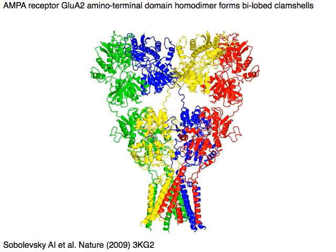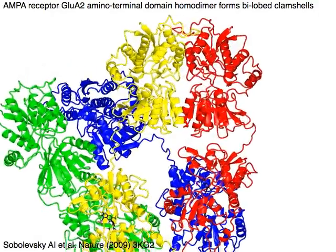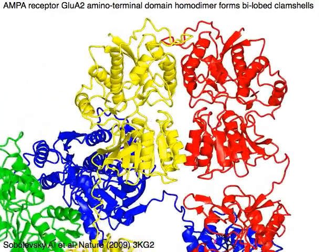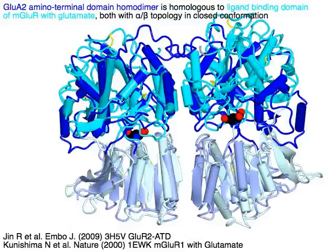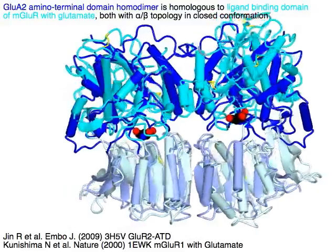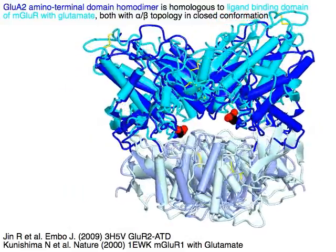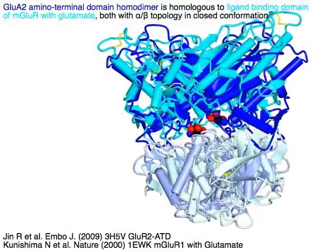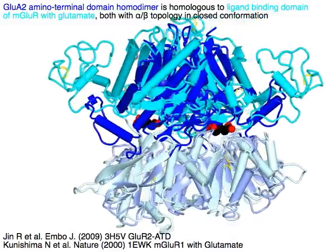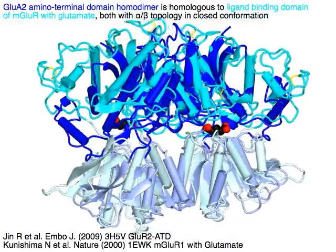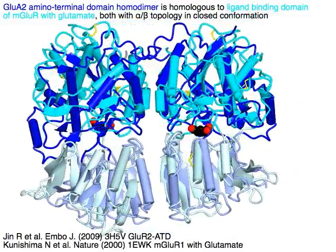AMPA Receptor GLU-A2 Amino Terminal Domain homo-dimer forms by lobed clamshells. The homo-dimer in blue is homologous to the Ligand Binding Domain of mGluR in cyan, both with alpha-beta topology in closed conformation.